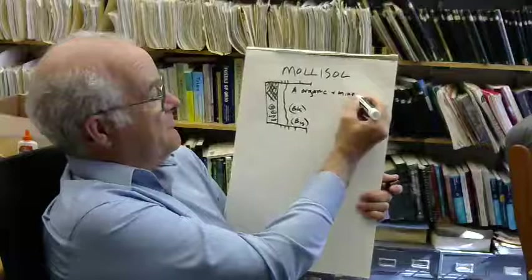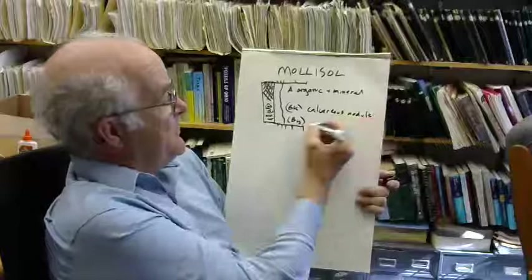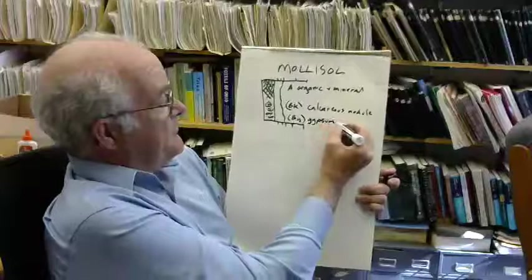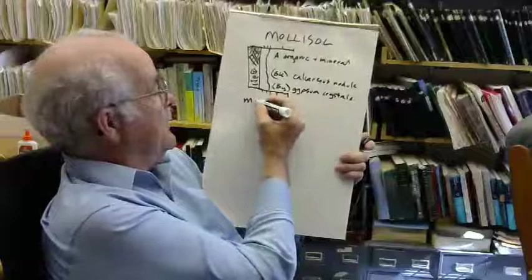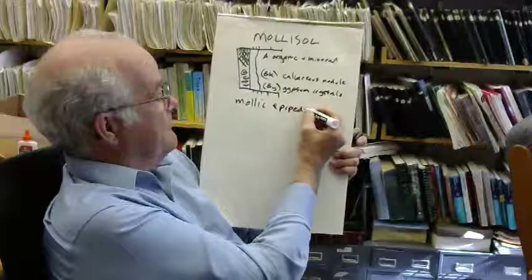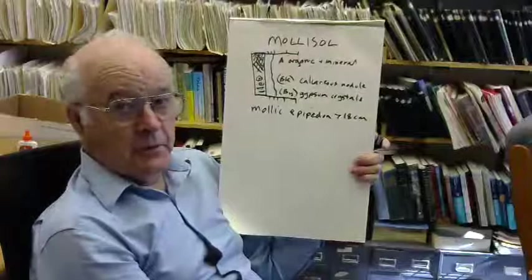So this is organic plus mineral. This is calcareous nodules. You get these in dry mollusols, but it's not necessary for a mollusol. This is gypsum crystals found in the drier range. But the thing about this A horizon is that it is a mollic epipedon, greater than 18 centimeters in thickness. I don't know why they decided on this, but they did. You have to have a certain thickness of a mollic epipedon for it to qualify as a mollusol.